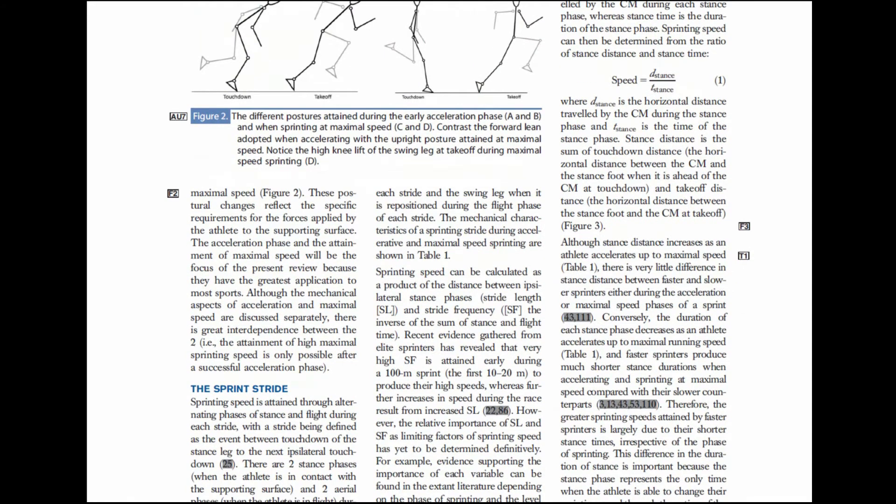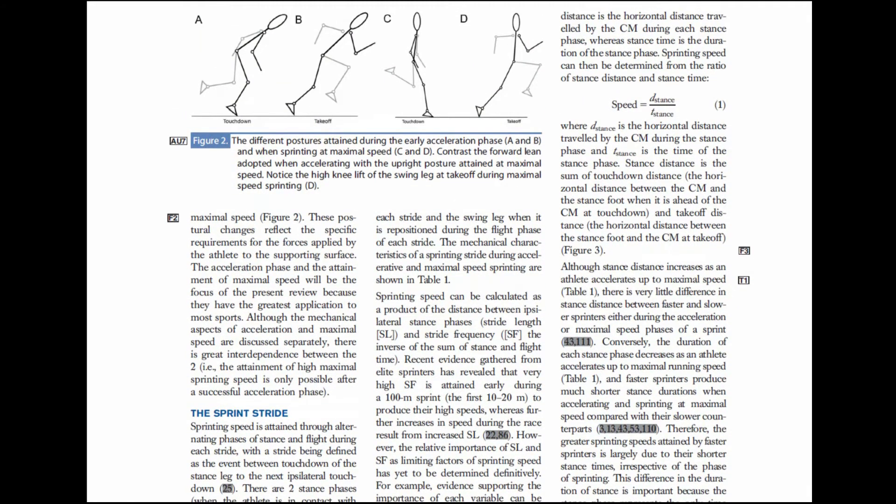The first thing we got from our literature review was that speed can be regarded mathematically as the ratio between stance distance and stance time. What the literature shows is that the fastest sprinters tend to always produce the shortest stance times. So stance time and the production of short stance times appears to be a potent limitation to high sprinting speeds.